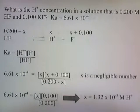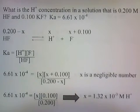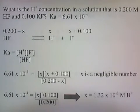What is the H+ concentration in a solution that is 0.200 M HF and 0.100 M KF? Ka = 6.61 × 10^-4.